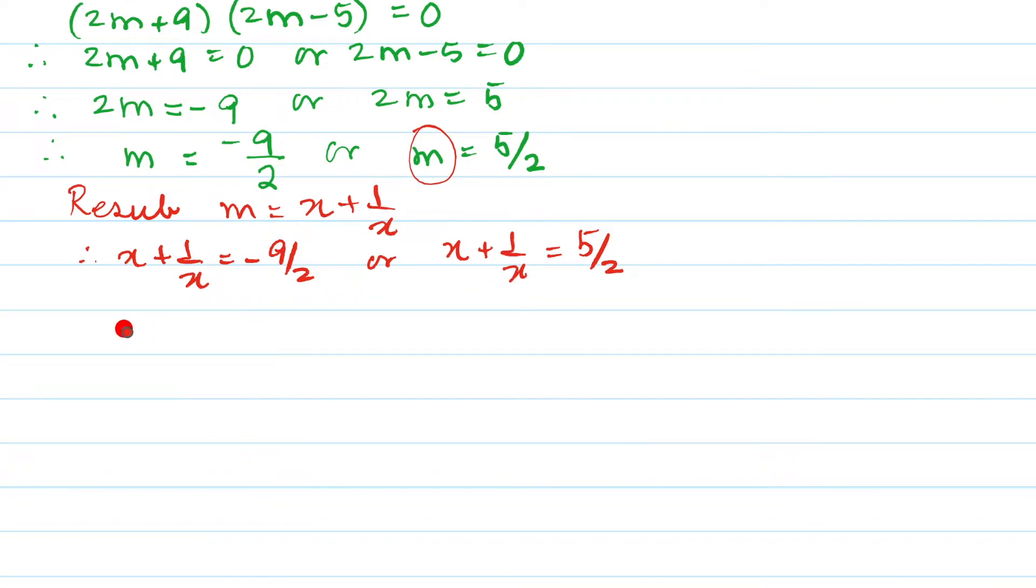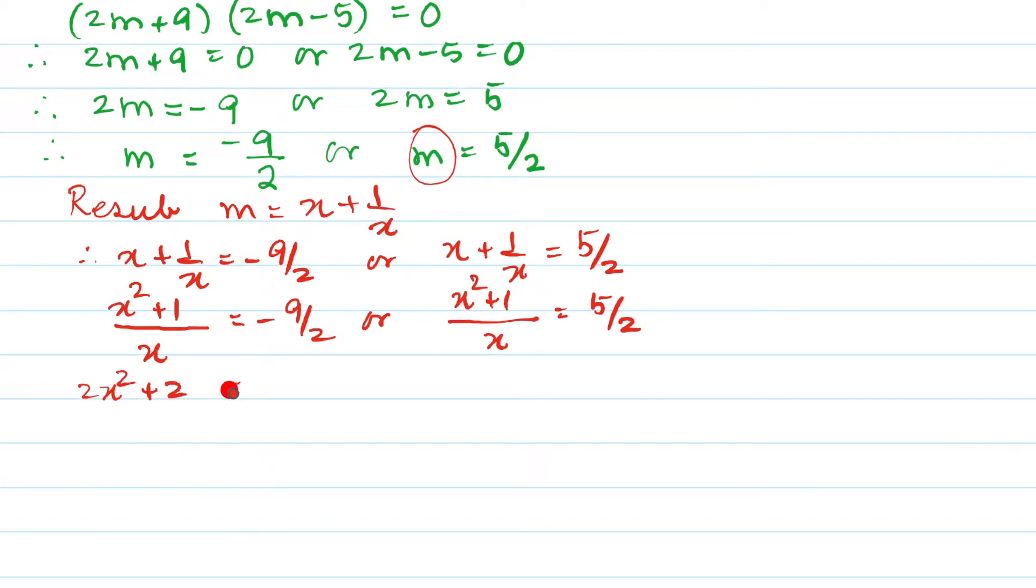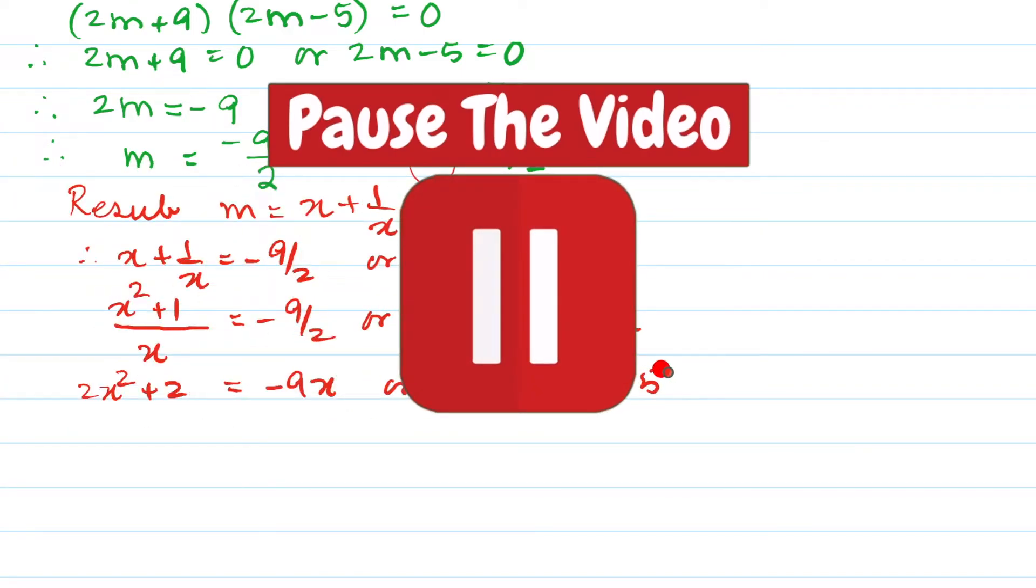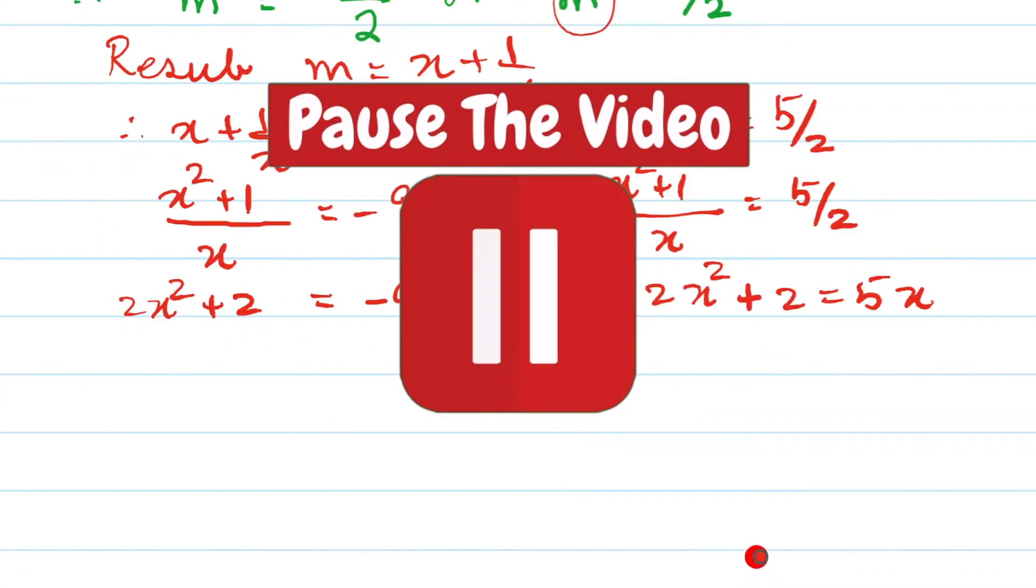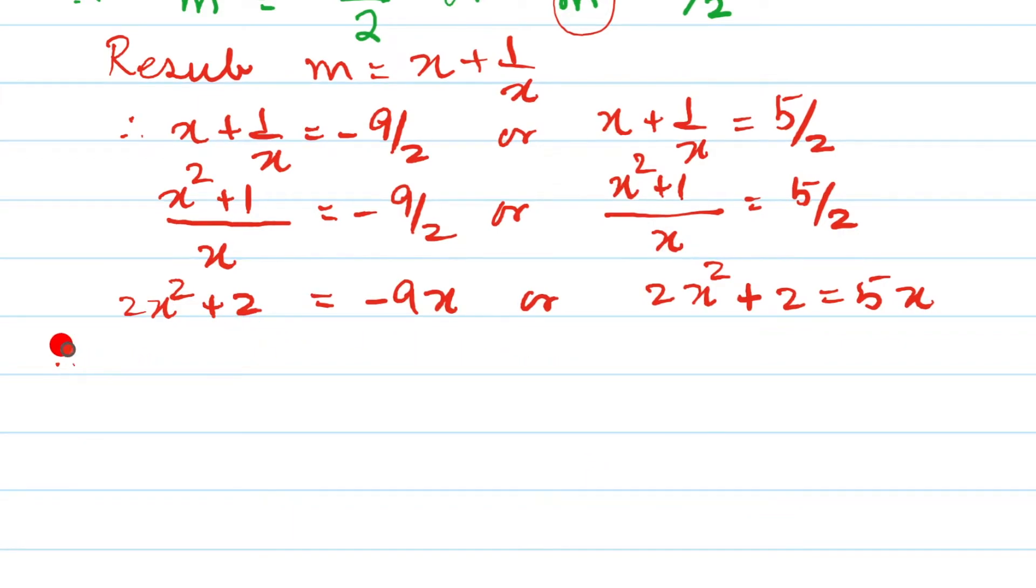Now, if I have to simplify this, I will need to take the LCM here. So I'll take x² + 1, LCM there like so and here also the same thing x LCM. So x² + 1 like so. Now let's cross multiply. So it will become 2x² + 2 = -9x over here. Here it will be cross multiply. You can do this on your own. You can keep the video on pause and you can write down the step one step at a time and then you can check back with my work.